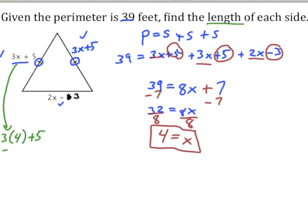That'll give us one side length. 12 plus 5 makes 17. Because of these congruence marks, this side is also 17.